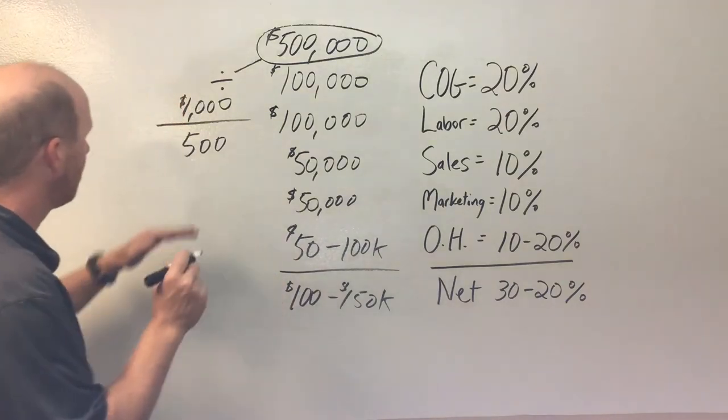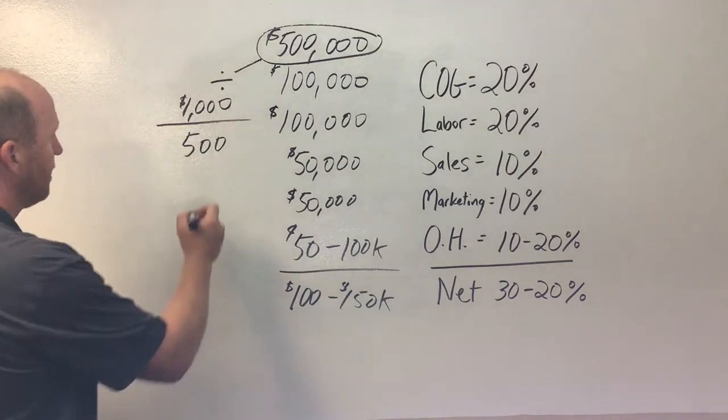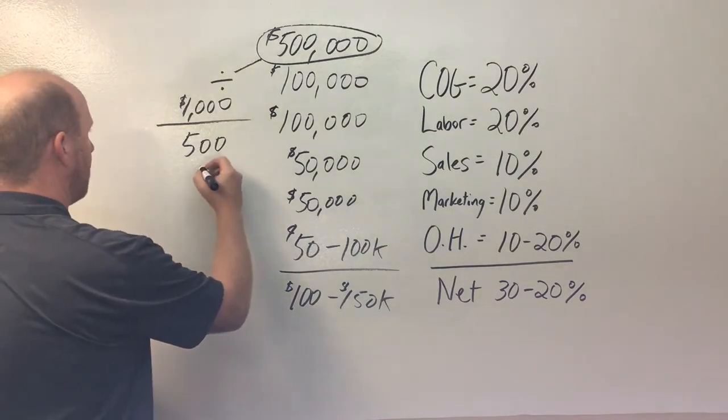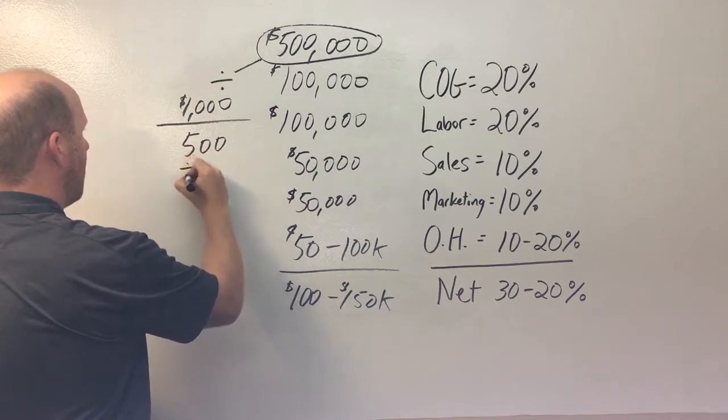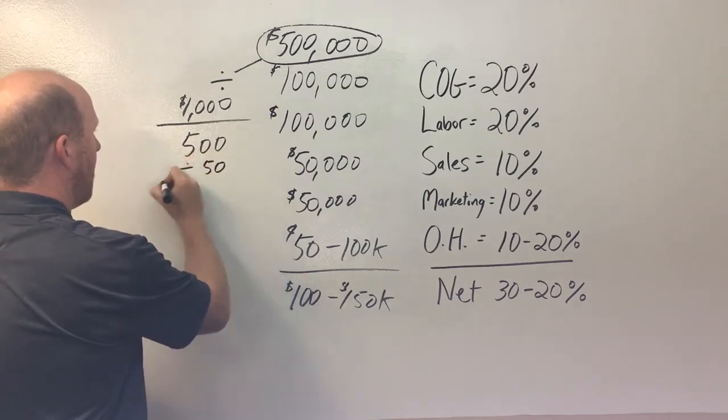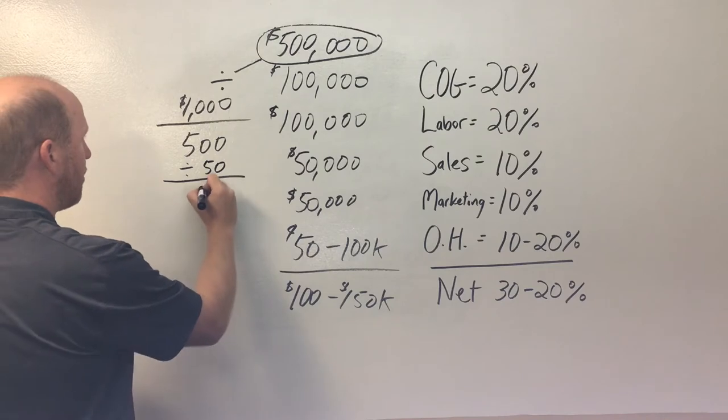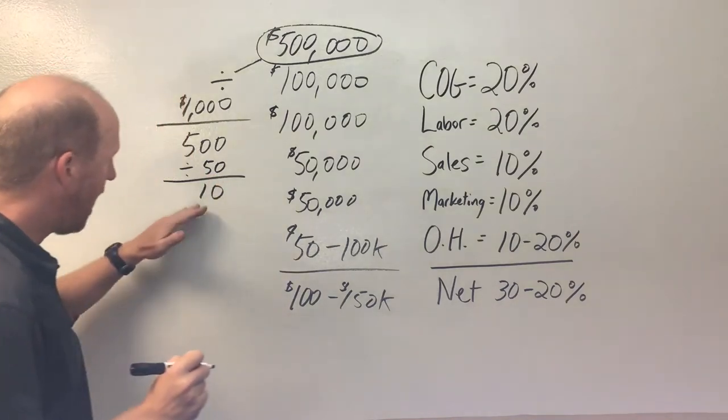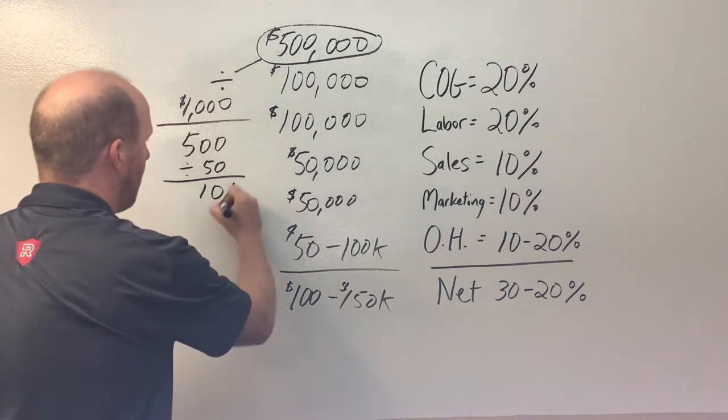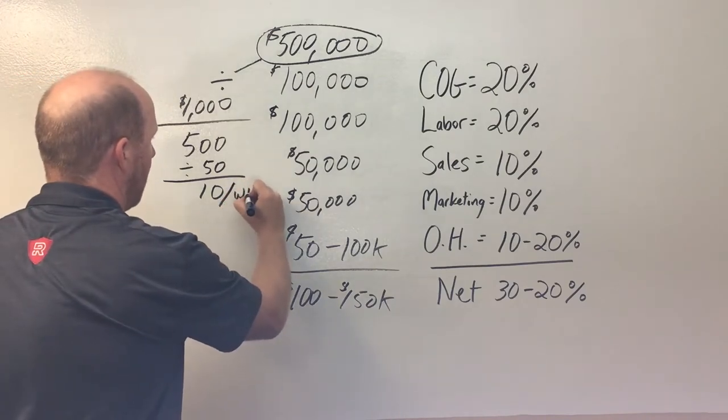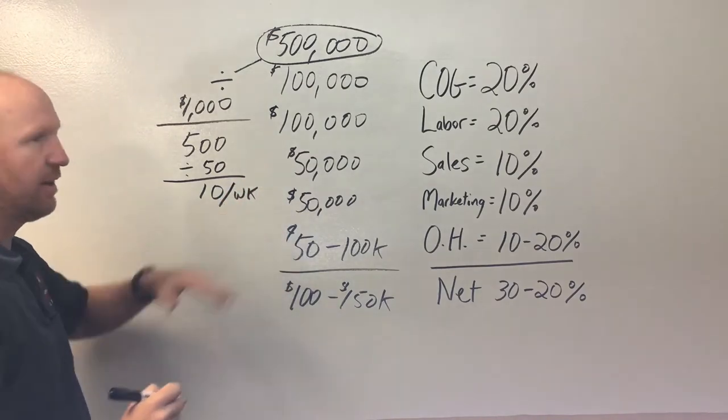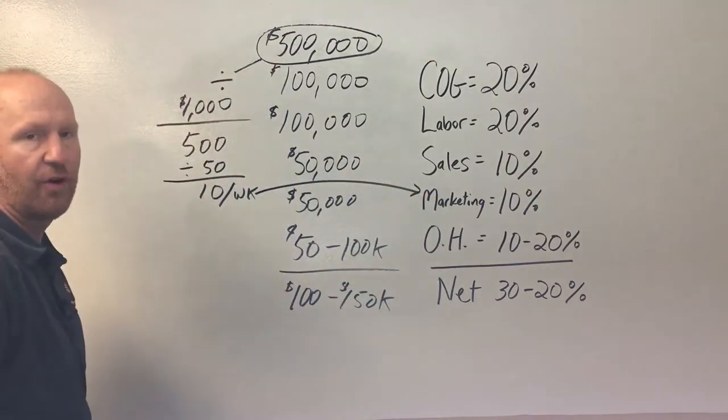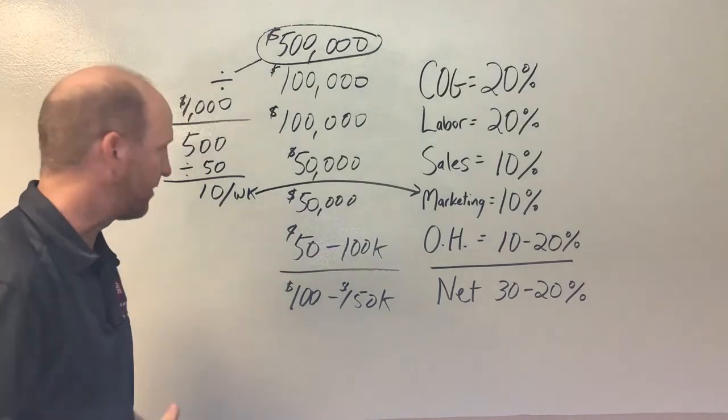So this 500 leads, let's say we got 50 weeks in the year, 50 working weeks. So we're going to divide this by 50 weeks. So what is that? 10 leads per week. So now we can really break it down for our marketing department and say we need 10 leads per week to generate $500,000 in business.